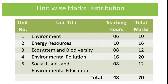Unit 4 is Environmental Pollution. In this unit we discuss the types of pollution like natural pollution and artificial pollution, as well as various types of pollution like land and water pollution. We also cover the causes of pollution and its effects on the environment — both living and non-living things. This unit can be completed in 16 hours and 20 marks are allocated.